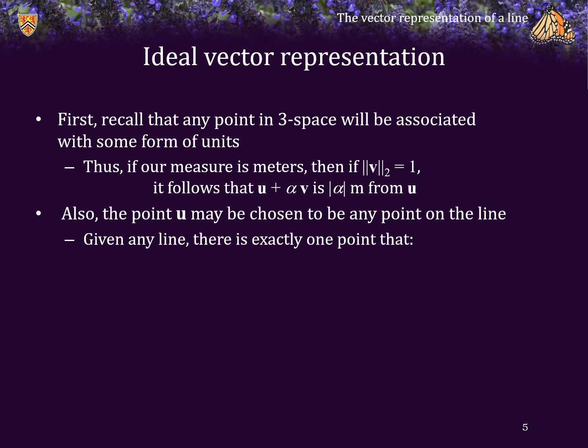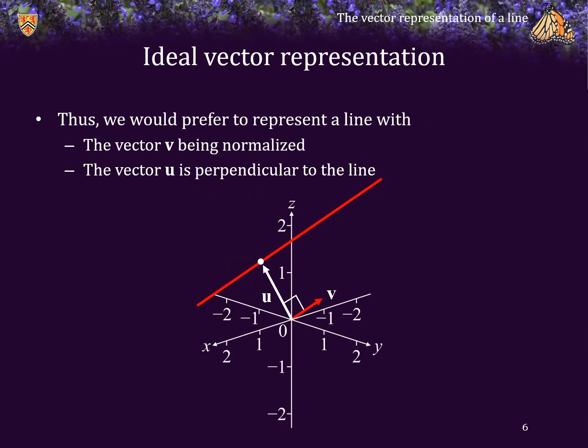Consequently, on any line, you should be aware that there is exactly one point that satisfies both of these conditions: it has the smallest norm, that is, it is the point on the line that is closest to the origin, and also that point or vector is perpendicular to v. Thus, we would prefer to represent a line where the vector v is normalized and the vector u is perpendicular to the line, that is, u is perpendicular to v.